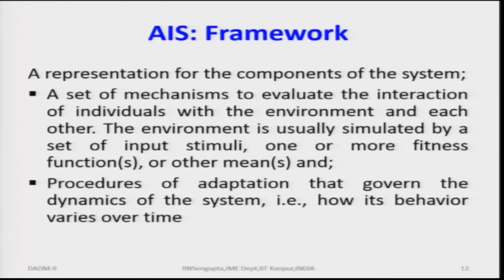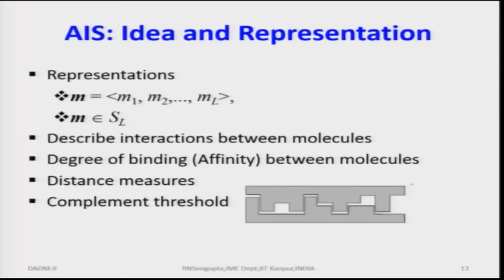A set of input stimuli and one or more fitness functions could be utilized in place of the stimuli, or other means can also be utilized. A procedure for adaptation governing the dynamics of the system — that is, how its behavior will vary or evolve with time — will also be briefly discussed and analyzed. When trying to find the best state function and how replication can be done, or how good or bad the solutions are with respect to whether you want to maximize, minimize, or have some combination of them, we need different concepts of distance functions.